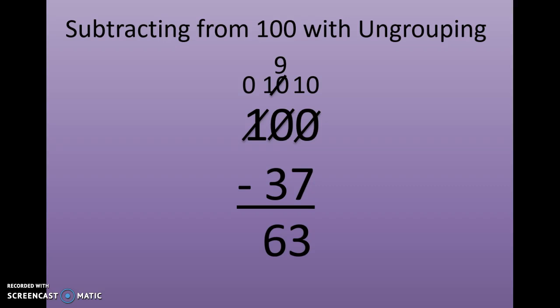So 100 minus 37 equals 63. That is how to subtract from 100 with ungrouping.